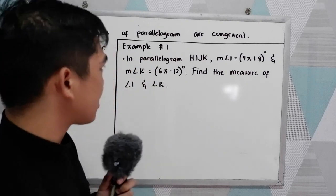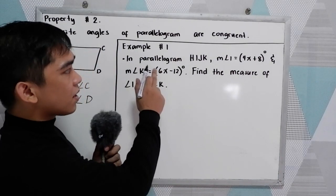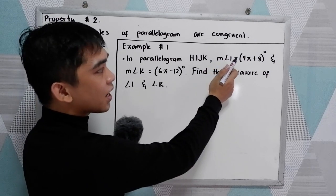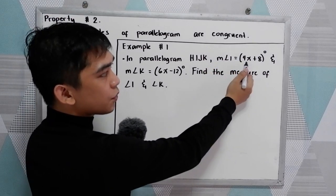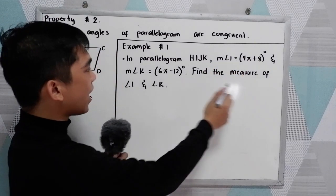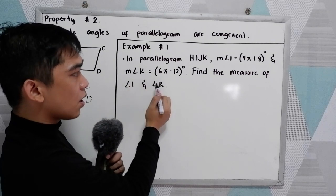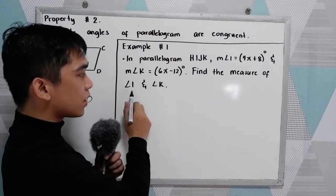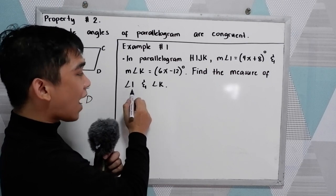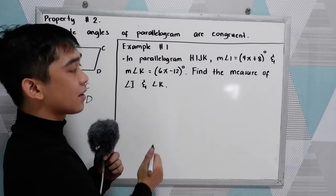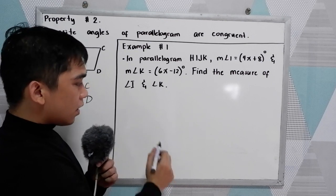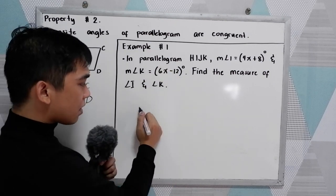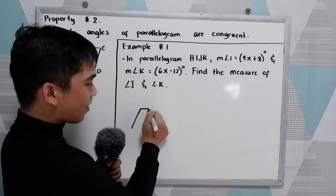Now let's have our first example. In parallelogram HIJK, measure of angle I is equal to 4x plus 8 degrees, and measure of angle K is equal to 6x minus 12 degrees. Find the measure of angle I, angle I, and angle K. Now, let us illustrate our parallelogram.